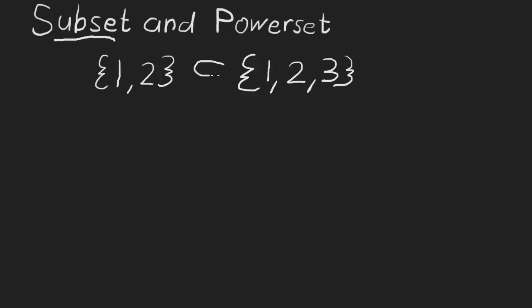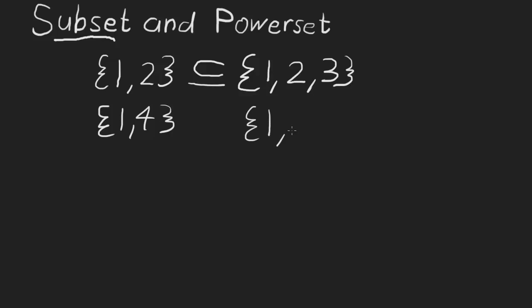So we write it down this way: the set containing 1 and 2 is a subset of the set containing 1, 2, and 3. What if we had the set {1, 4} and the set {1, 2, 3}?